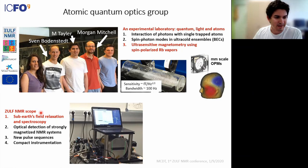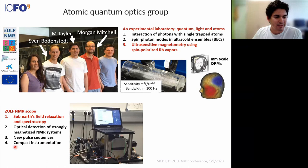Our main interests in ZULF NMR: we're interested in relaxometry below the Earth's field; hyperpolarized NMR systems interacting with optical magnetometers; pulse sequences to control nuclear spins in the ZULF regime; and compact instrumentation. This is our tabletop ZULF spectrometer — a magnetic shield with the action happening inside, and an optic system around that doing optical probing within the magnetometer.